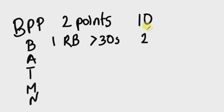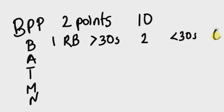For fetal breathing, a score of two is assigned if there is greater than one episode of rhythmic breathing lasting for greater than 30 seconds within 30 minutes. A score of zero is assigned if there is less than 30 seconds of breathing within 30 minutes.